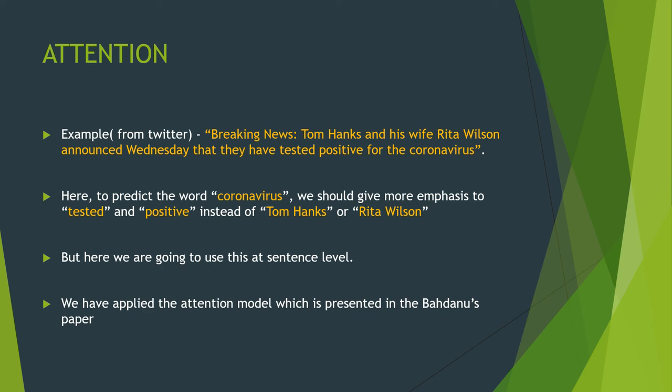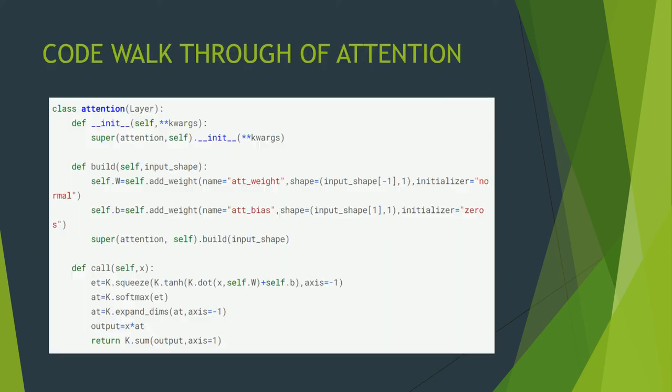For the attention mechanism, consider this Twitter example: 'Breaking news: Tom Hanks and his wife Rita Wilson announced Wednesday that they have tested positive for the coronavirus.' To predict the word 'coronavirus,' we should give more emphasis to 'tested' and 'positive' rather than 'Tom Hanks' and 'Rita Wilson.' Here, we use this at the sentence level instead of word level, since we have 100 tweets per author and need to weight the fake tweets more.